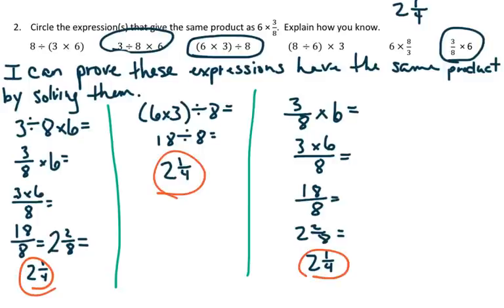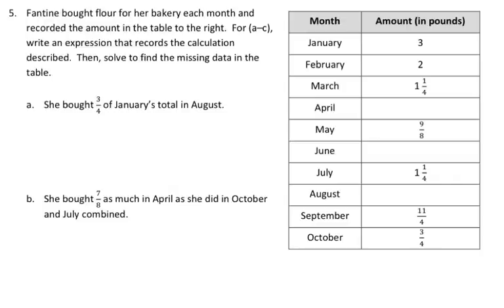Now we're going to take a look at problem number 5. It says Fantine bought flour for her bakery each month and recorded the amount in the table to the right. For A through C, write an expression that records the calculation described, then solve to find the missing data in the table. Let's take a look at A and B.